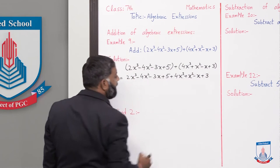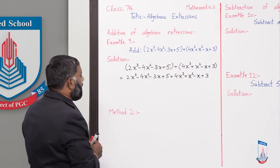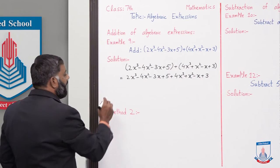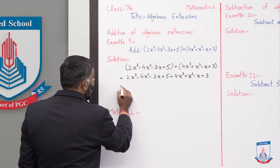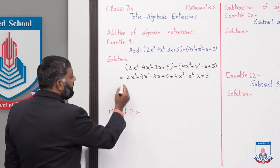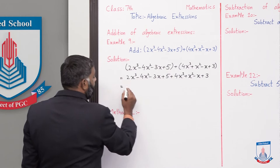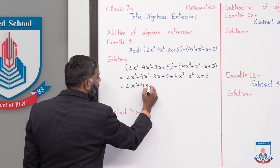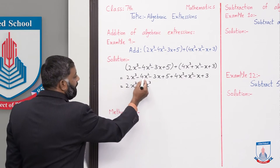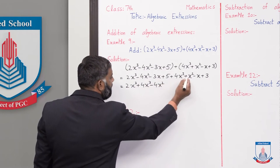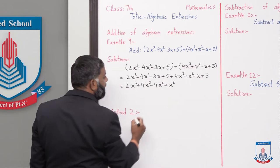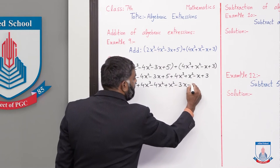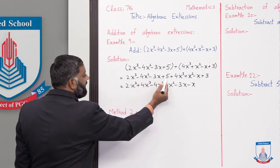To yeh aajega: 2x³ - 4x² - 3x + 5 + 4x³ + x² - x + 3. Ab hum like terms ko ekattha likhenge. 2x³ aur 4x³ like terms hain, to 2x³ ke saath 4x³ likhenge. Then minus 4x² plus x², yeh dono bhi like terms hain. Then minus 3x minus x, yeh bhi like terms hain.